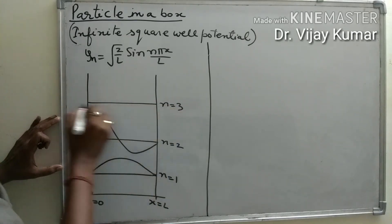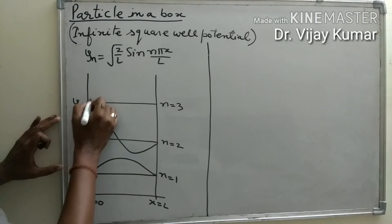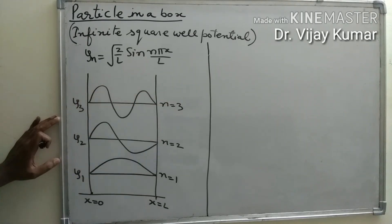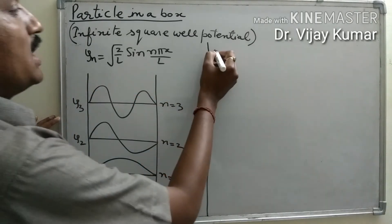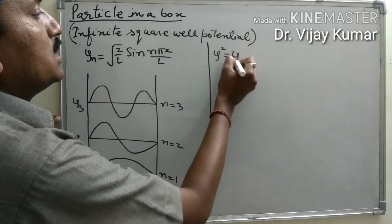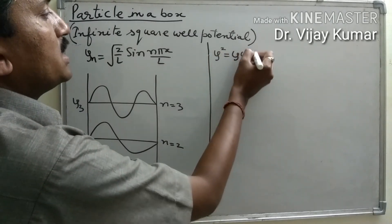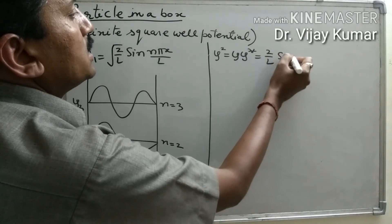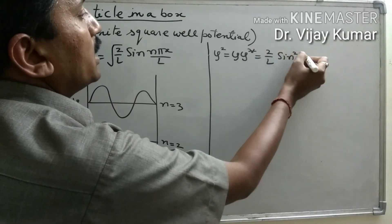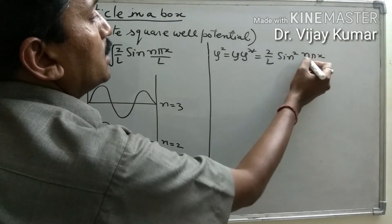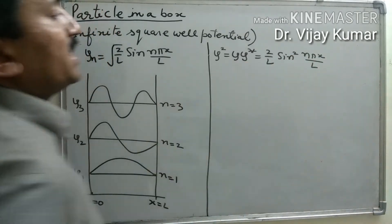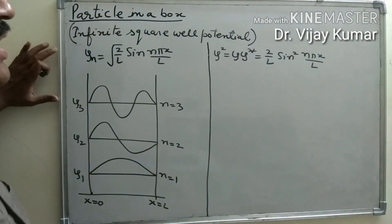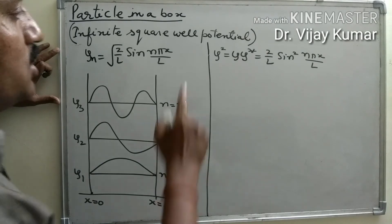At third order, n = 3, the third wave function may be represented like this. ψ² — that is, ψ times ψ* — equals (2/L) sin²(nπx/L), and this represents the probability density of finding the particle inside the box.